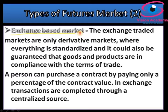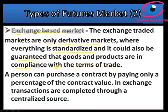The second type is exchange-based markets. These exchange-traded markets are derivatives markets — standardized, with a centralized regulating authority and licensed participants. Everything is standardized, which guarantees compliance with terms of trade. For example, delivery is only given after three months, and there is a margin system, mark-to-market concept, and everything is based on terms of trade. Counterparty risk is low in exchange-based markets.